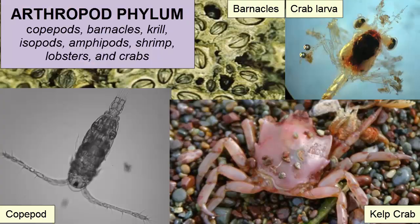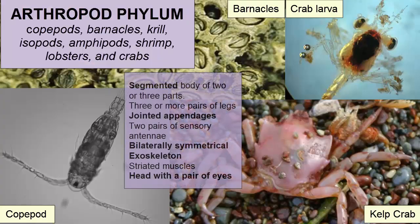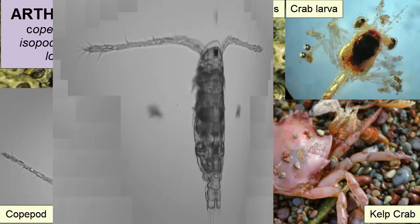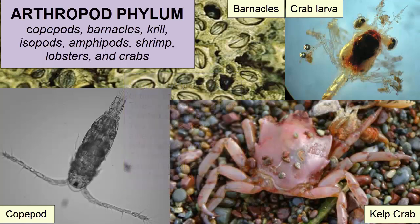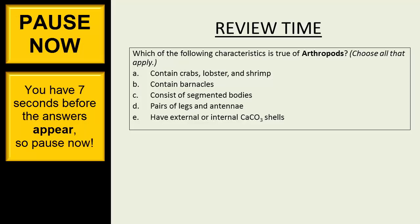The Arthropoda phylum consists of animals with a segmented body of two or three parts. There are three or more pairs of jointed appendages including pincers, mouthparts, walking legs, and swimming appendages, and two pairs of sensory antennae. They are bilaterally symmetrical with an exoskeleton, striated muscles, and a head with a pair of eyes. Arthropoda are the most successful of all animal phyla and include copepods, barnacles, krill, isopods, amphipods, shrimp, lobsters, and crabs.